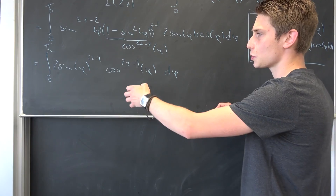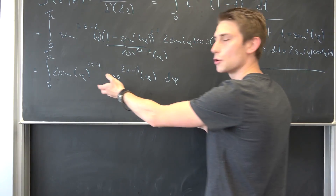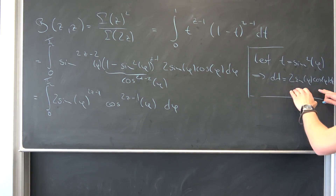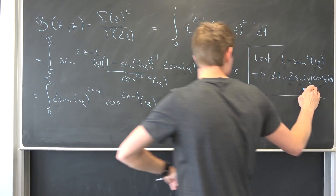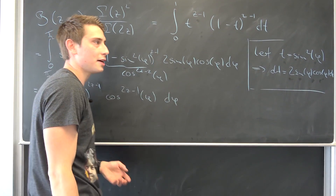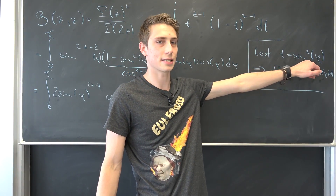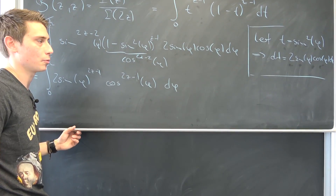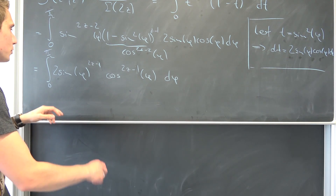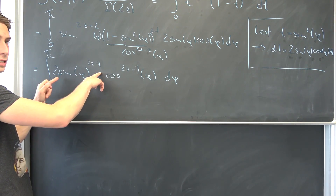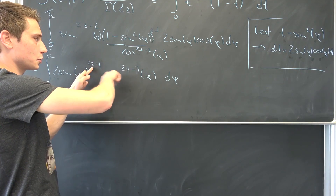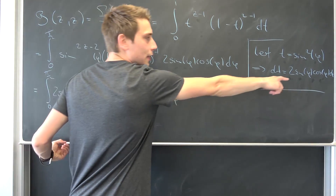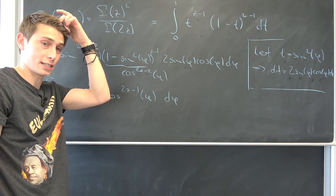Now all that's really left is to turn this into something nice. If you take a look at 2 times sine of phi times cosine of phi, that is actually just the sine of 2 times phi — this is the double angle formula. Meaning if we bring this factor of 2 inside and factor out all the exponents, we could get our double angle formula, and that would be quite easy to integrate.